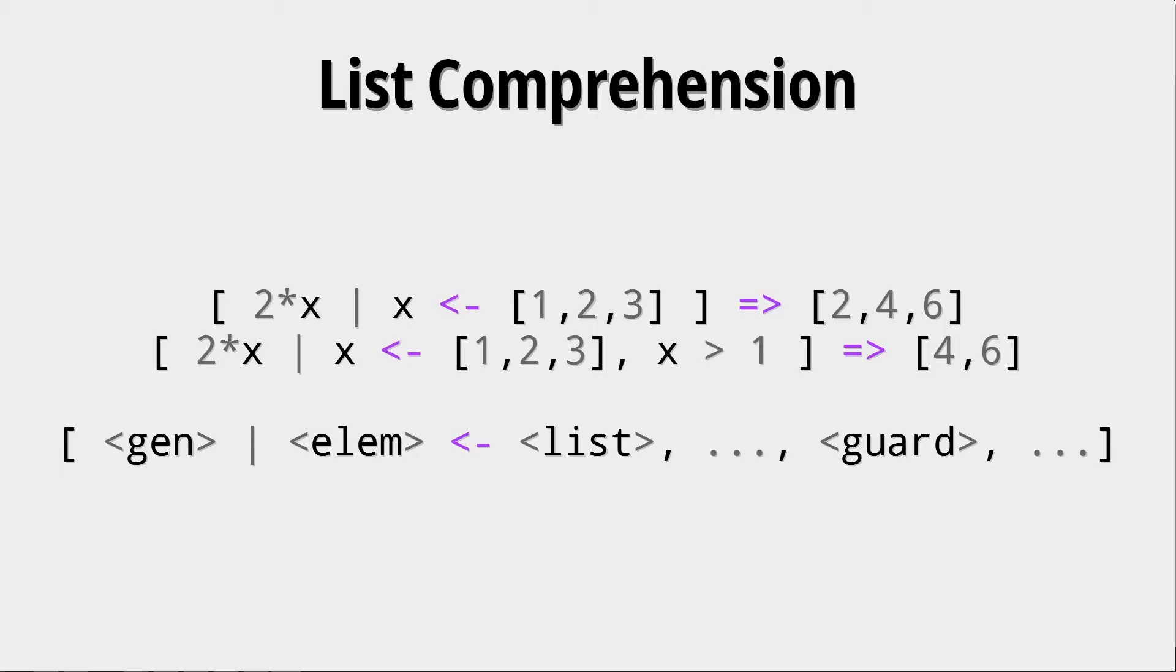For those list comprehensions, we can have guards, meaning that we can pre-filter the elements we actually want to look at. In the second example, we want to ignore all x's that are smaller or equal to one, so we ignore the one and start with two and three. It's very important that you can do this on multiple lists at once and you can use multiple guards.